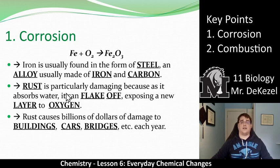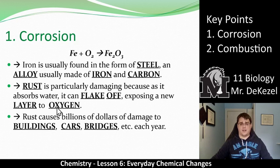Rust causes billions of dollars of damage each year to buildings, cars, and bridges — anything that's metal and exposed to oxygen, which is anything also exposed to water. So it makes sense that bridges and cars are common places for rust.